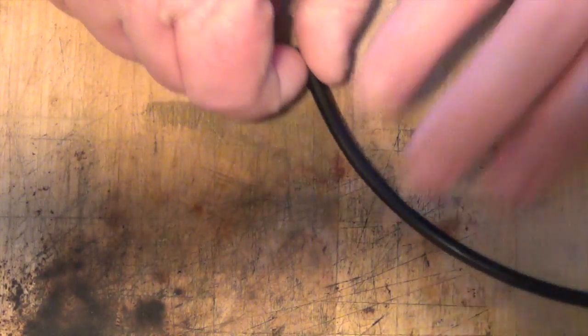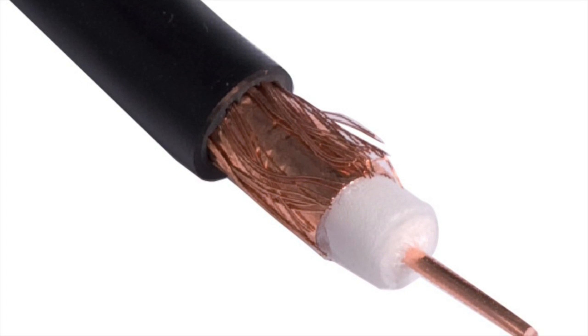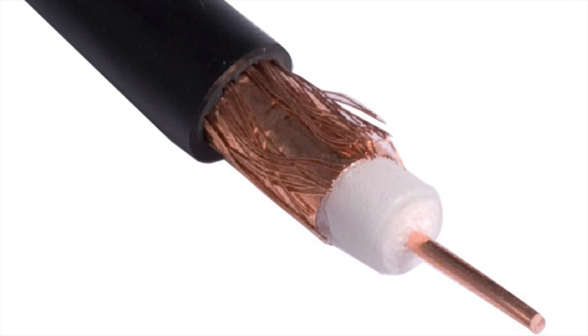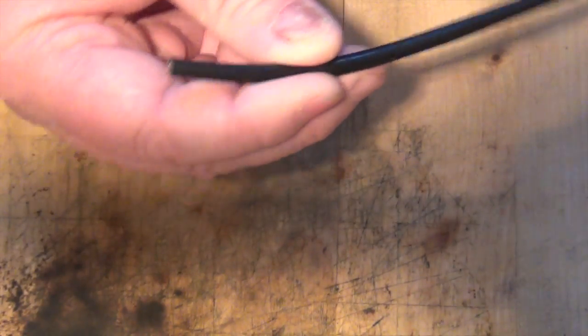So first of all we need to prepare our coax. Coax is made up of an inner conductor, an insulating dielectric, some braid, and an outer sheath.